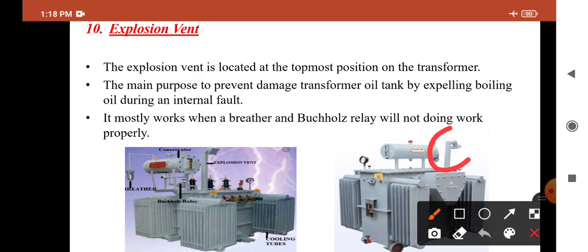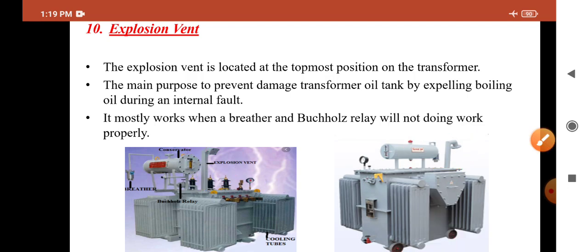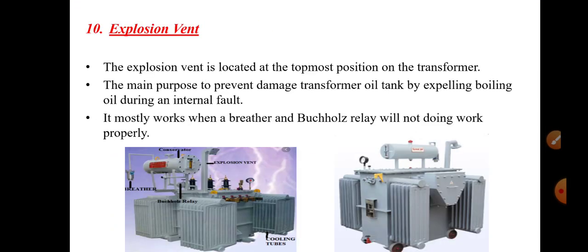The next part is the explosion vent, which is located at the topmost position of the transformer. The main purpose of the explosion vent is to prevent damage to the transformer oil tank by expelling boiling oil during an internal fault. If there is extra heated oil, it is removed through this vent. The explosion vent is used only for emergency purposes — if the Buchholz relay and breather are not working properly, the explosion vent is used.